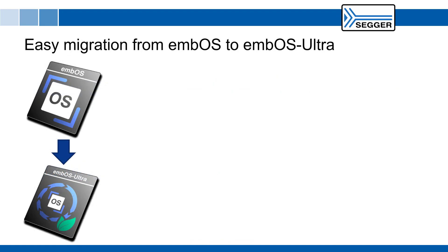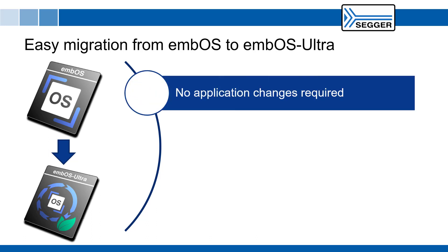Migrating from MBOS to MBOS Ultra is very simple. No application changes are required as the existing API and RTOS behavior are maintained. MBOS Ultra provides millisecond-aligned timing when using classic MBOS API calls, and it provides microsecond or hardware counter-cycle resolution where the new API calls are used.